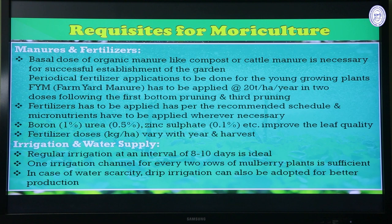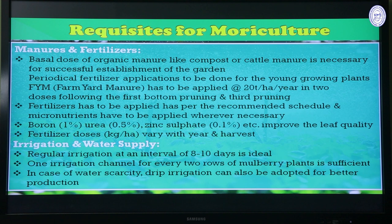A good irrigation system is essential since Morus species require adequate water for growth and development. Regular irrigation at an interval of 1 week to 10 days is ideal, with one irrigation channel sufficient for two rows of mulberry plants. In case of water scarcity, drip irrigation can be adopted along with drought-tolerant varieties.